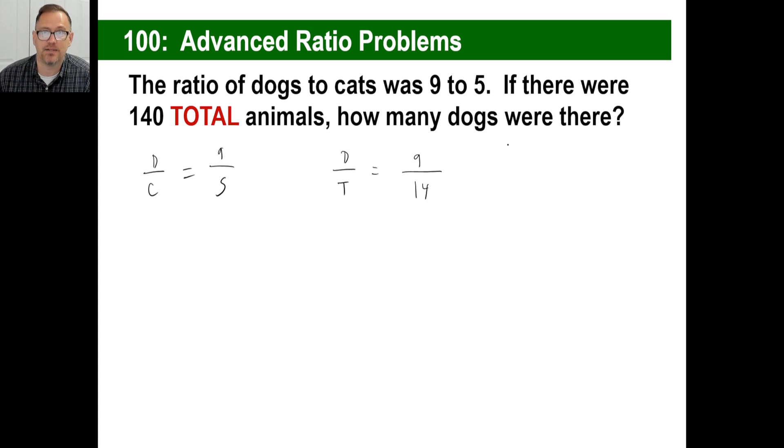That doesn't mean there are 14 total animals. In fact, they already told you there aren't 14 animals. They told you there are 140, but that's just a simple version. The last ratio we're going to do is cats to total. Well, if dogs is 9 to 14, what is cats? You tell me. 5 to 14, right? Cats to the total.